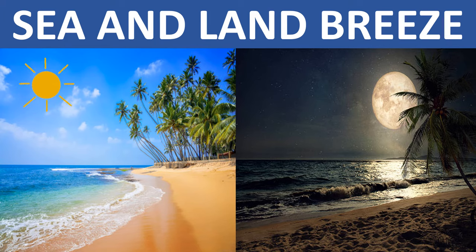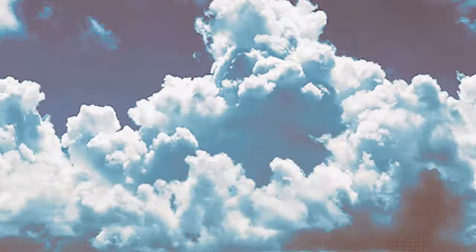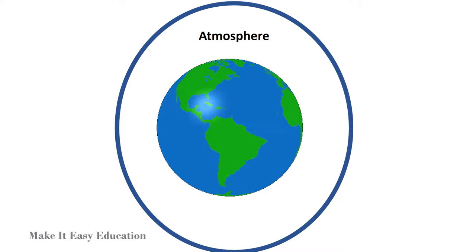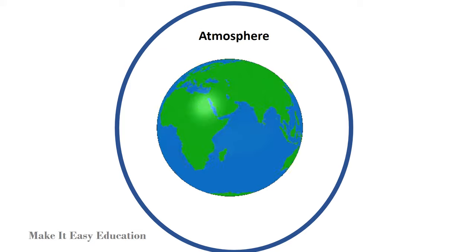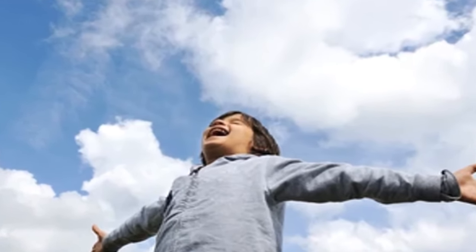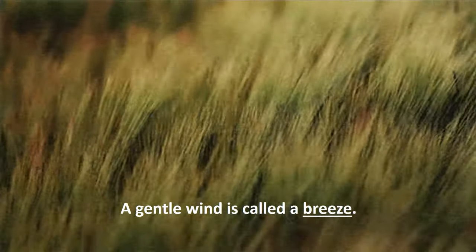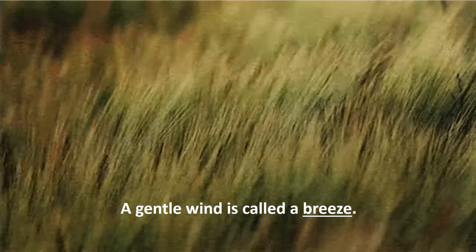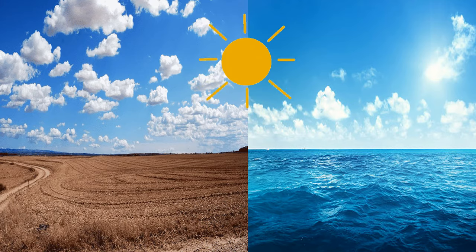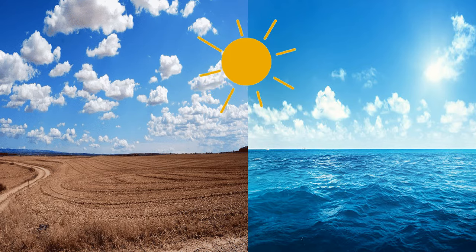Air is all around us. It is a mixture of several gases. Our earth is surrounded by a blanket of air called the atmosphere. We can feel air when it blows. A gentle wind is called a breeze. The sun heats up land and water bodies on earth. During the day, land heats up faster than water.